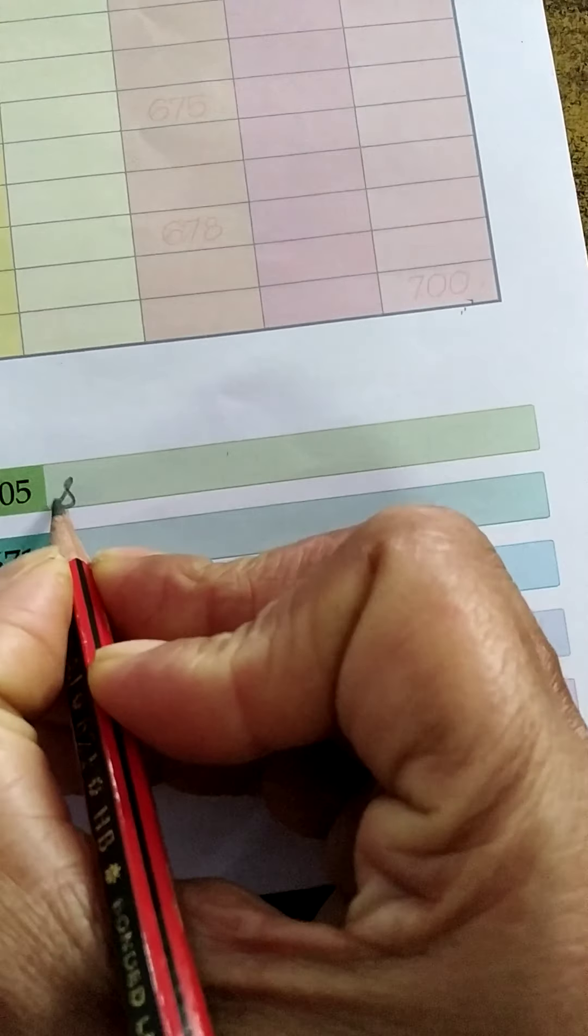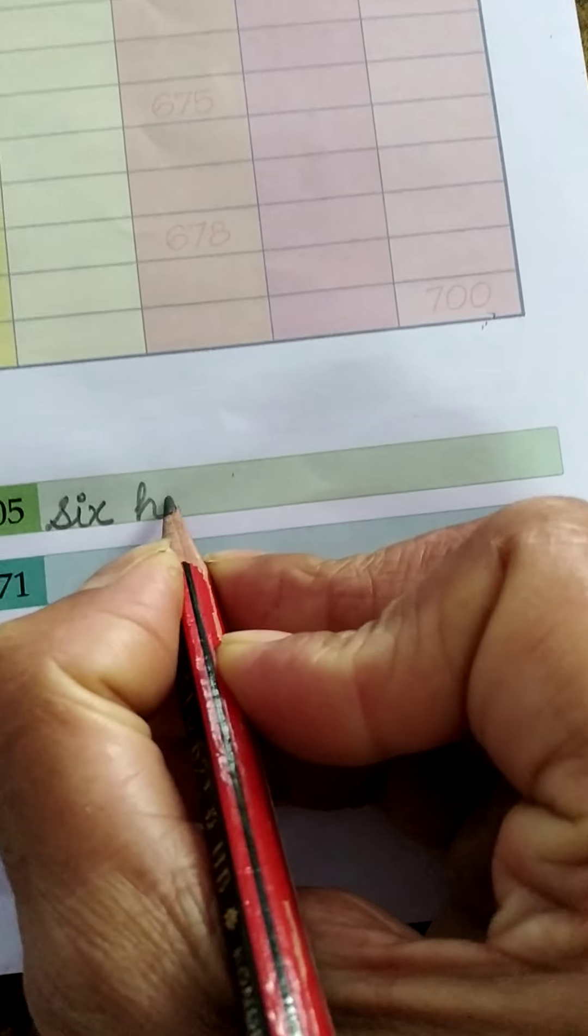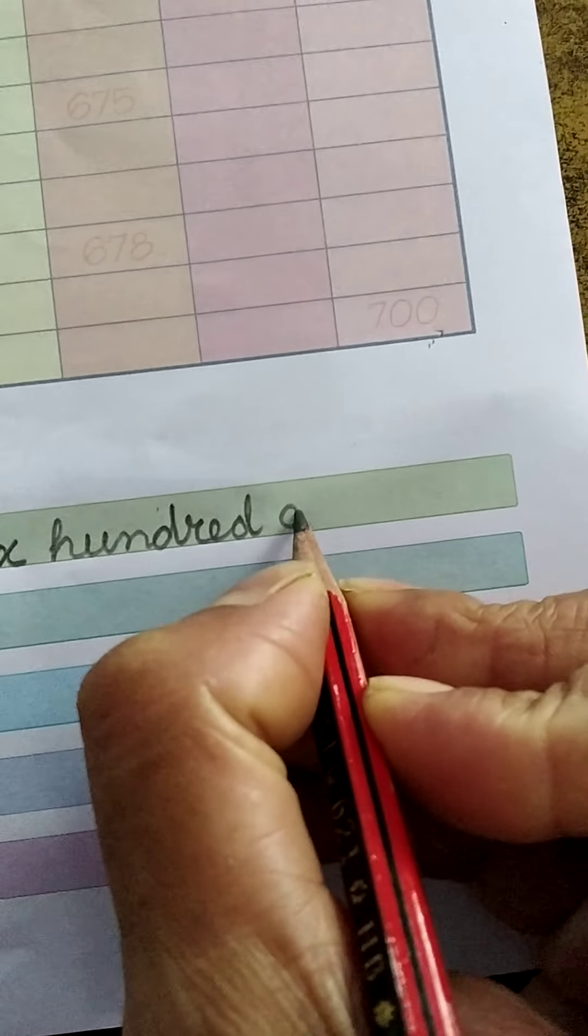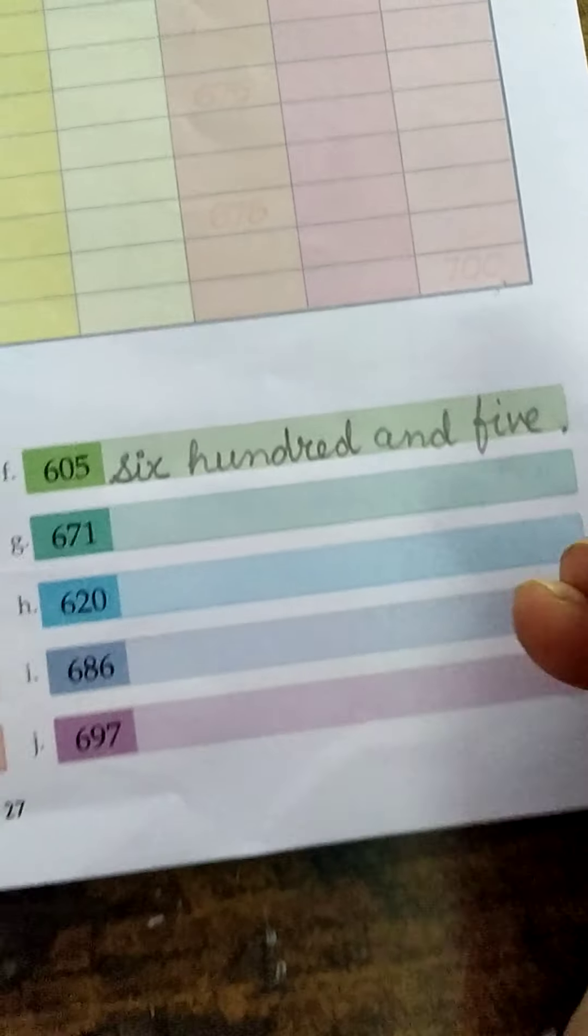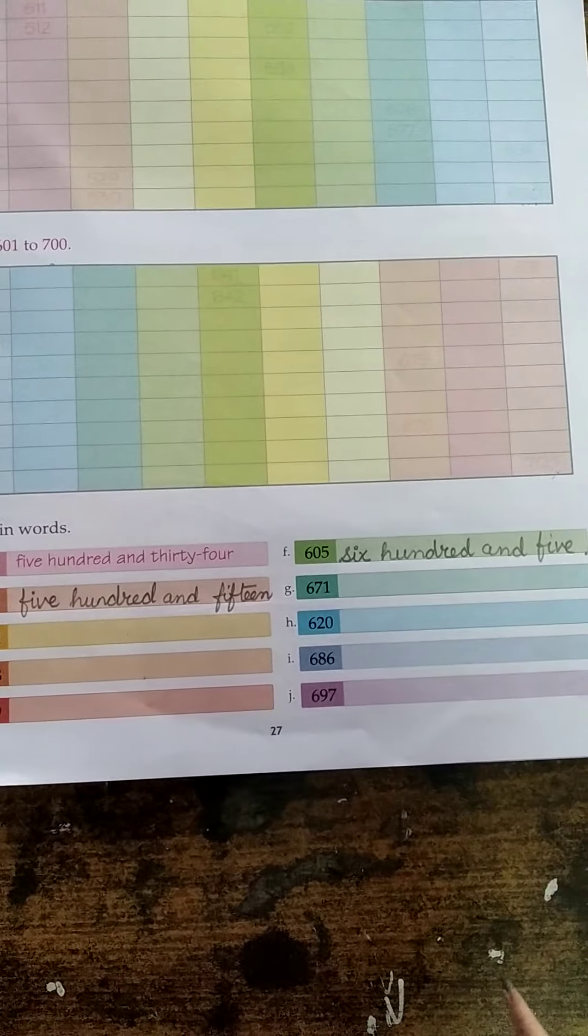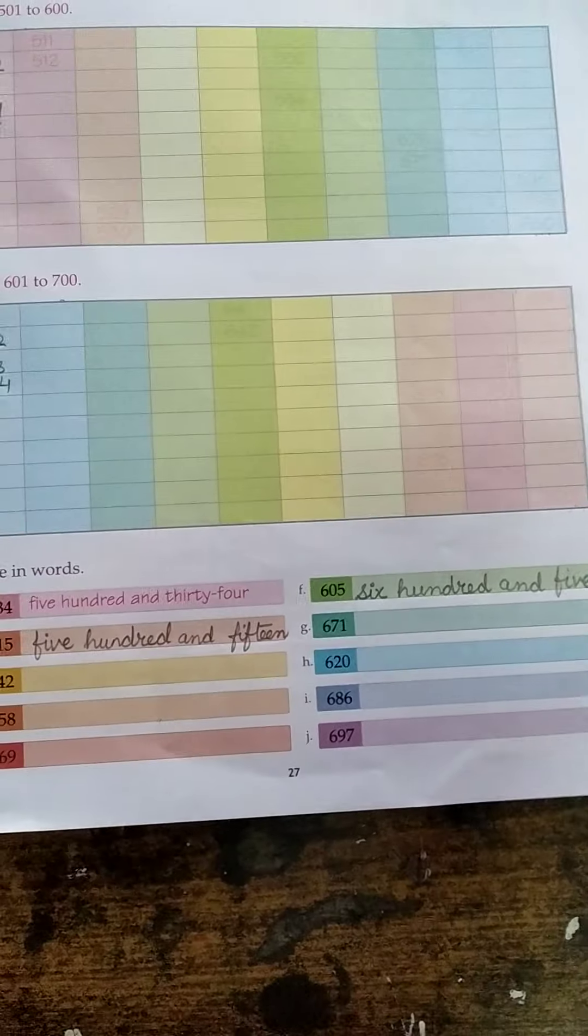So you write 6, spelling of 6. Then 100 and 5. Do your work very neatly. Do your work with your heart. Thank you.